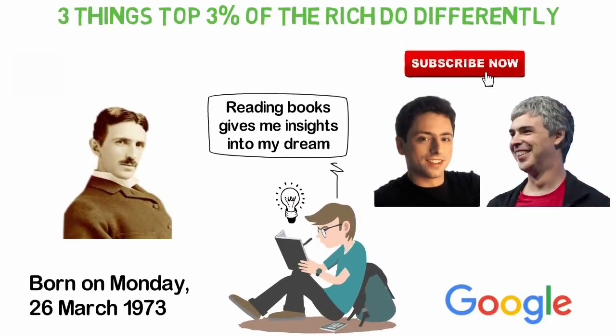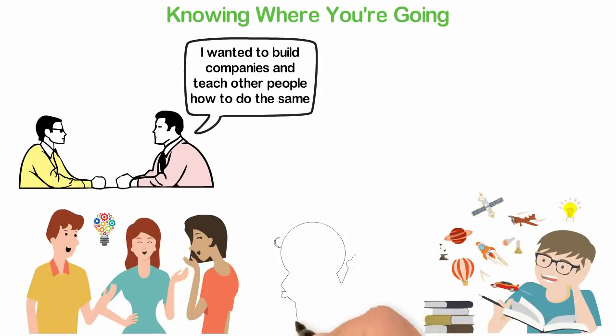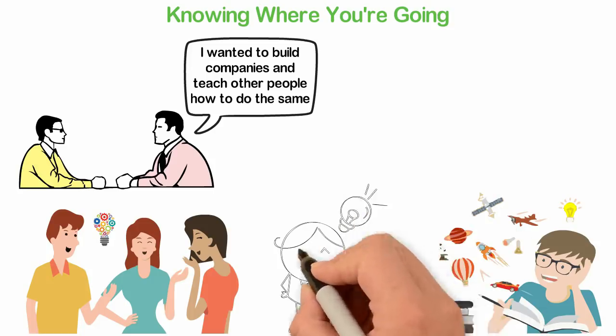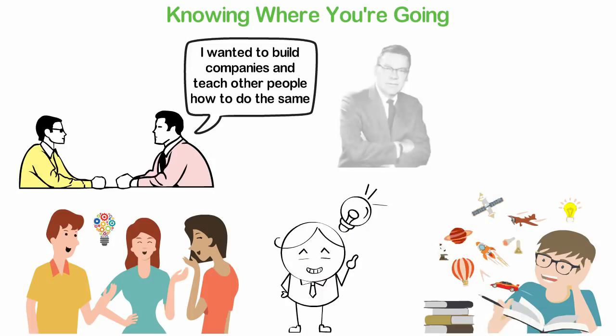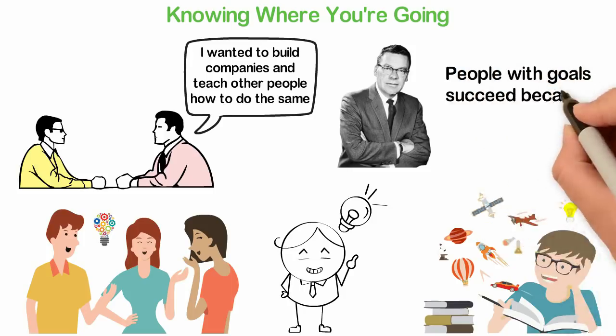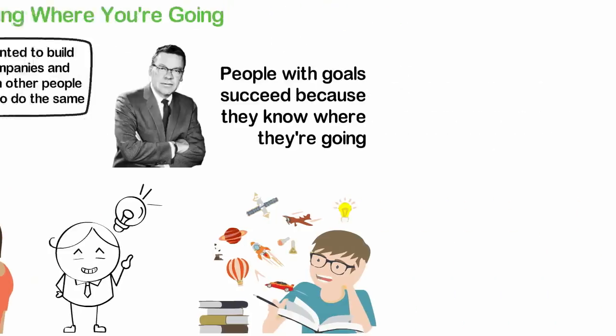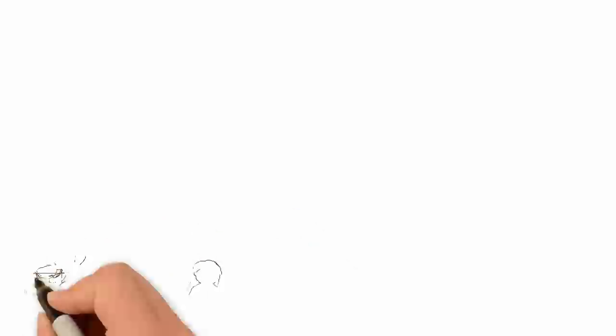At age 12, Larry Page already knew what he wanted to achieve with his life. He wanted to be an inventor. Because he already had a definite goal, it is easier to know the kind of books to read, the kind of friends to hang around, and even the kind of school to attend. Earl Nightingale said, people with goals succeed because they know where they're going. The very first thing the top most successful people do differently is that they know where they are going. They have a definiteness of purpose.